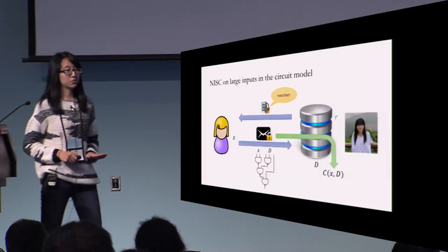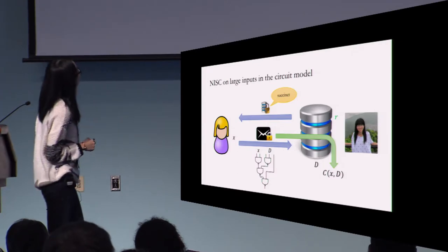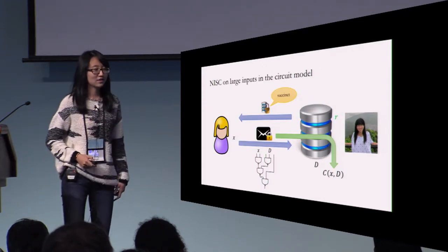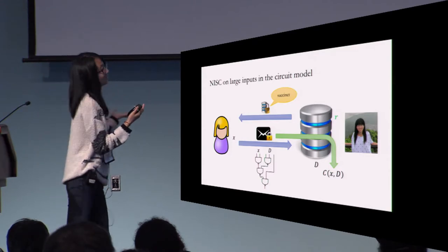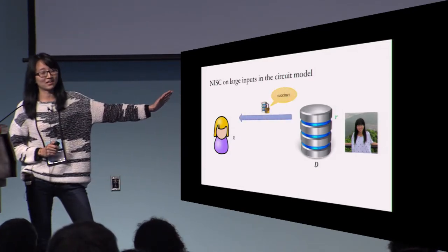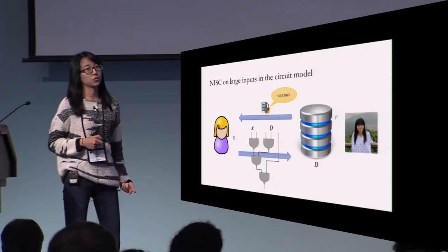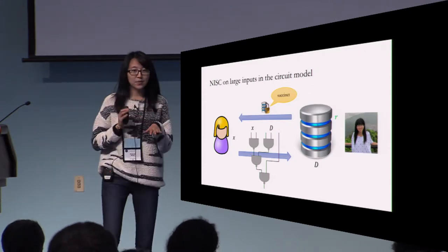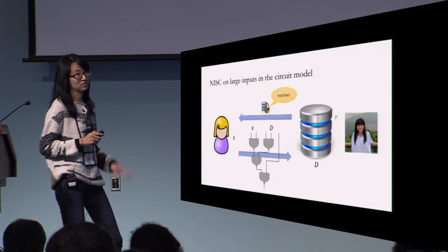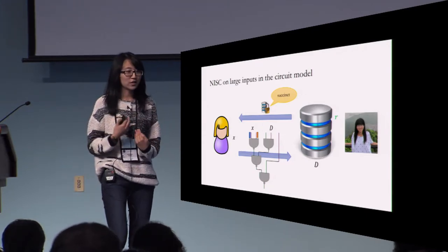Back to the problem we want to solve. First, I want to commit to my huge database and publish to the world. Whoever wants to do secure computation can just send me a single message with a circuit they want to jointly compute. Since it looks so similar to the definition of laconic OT, let's just do laconic OT — so the first message will be the first message of my laconic OT. In the second message, Alice will generate a garbled circuit for the circuit we want to jointly compute, and I become the evaluator of the garbled circuit.